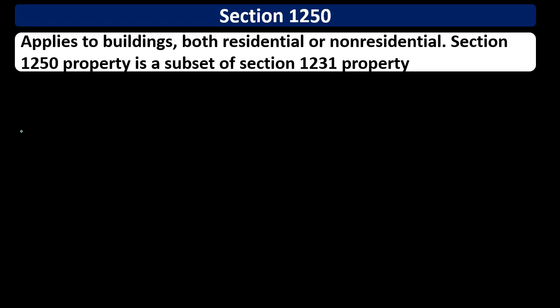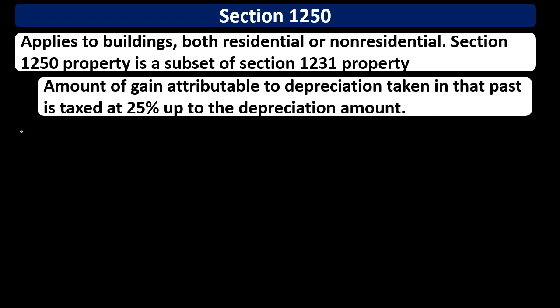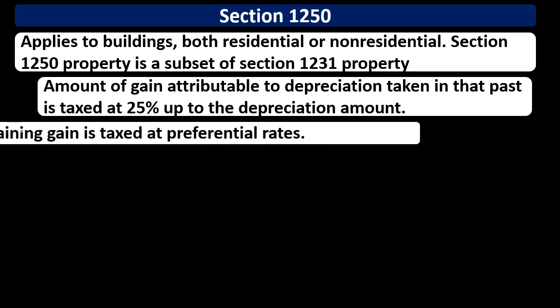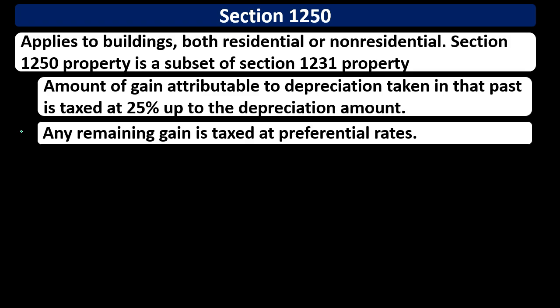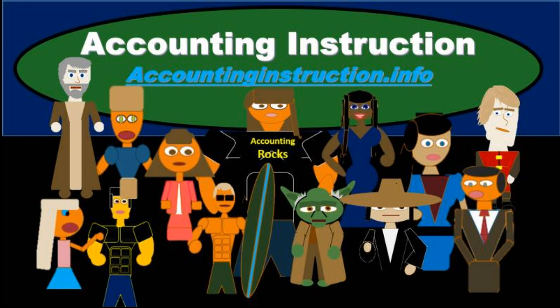Section 1250 property is also a subsection of Section 1231 and applies to buildings — both residential and non-residential. The amount of gain attributable to depreciation taken in the past is taxed at 25 percent, up to the depreciation amount. Any remaining gain is taxed at the preferential rates. For more accounting information and courses, visit accountinginstruction.info.